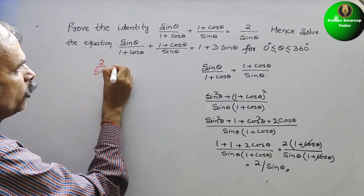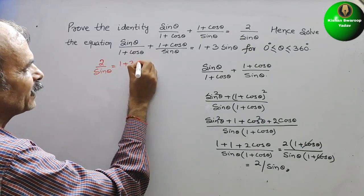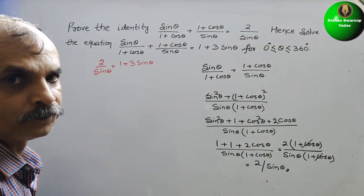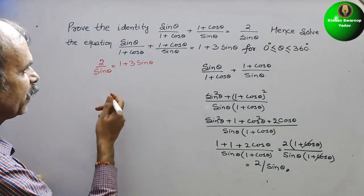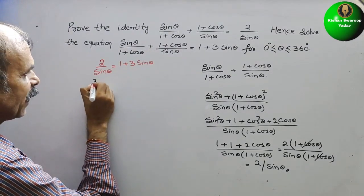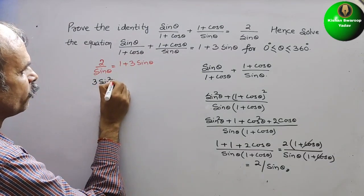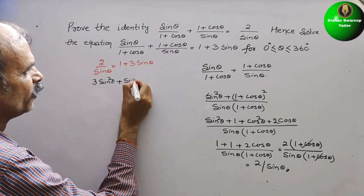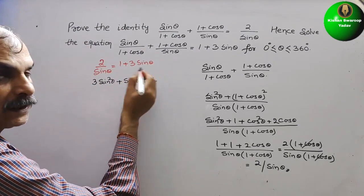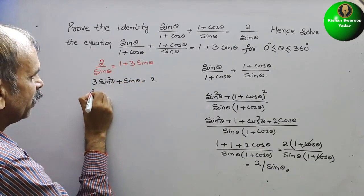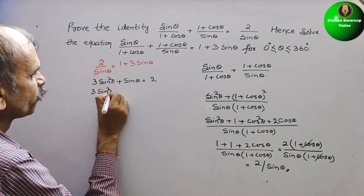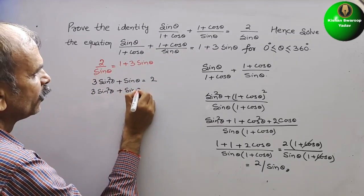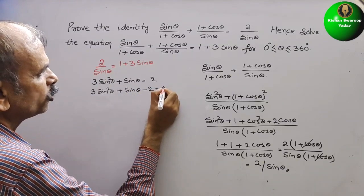So the equation becomes 2/sinθ = 1 + 3sinθ. Cross-multiplying gives 2 = sinθ(1 + 3sinθ), which expands to 3sin²θ + sinθ. Bringing 2 to the left side: 3sin²θ + sinθ − 2 = 0.